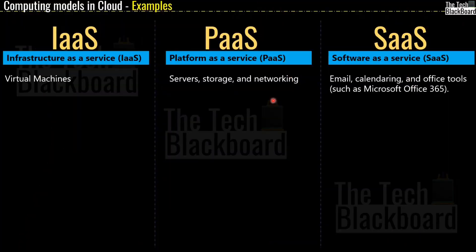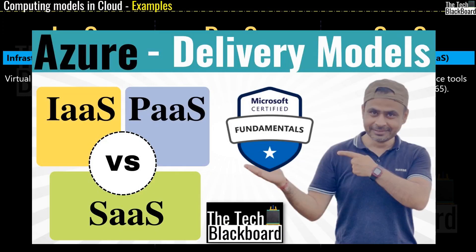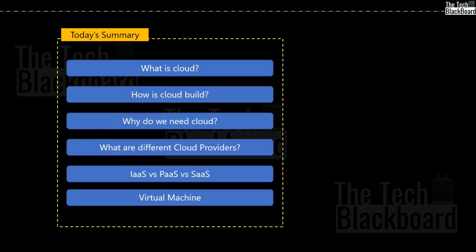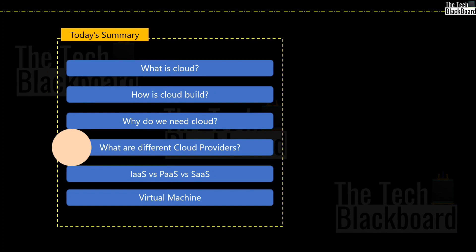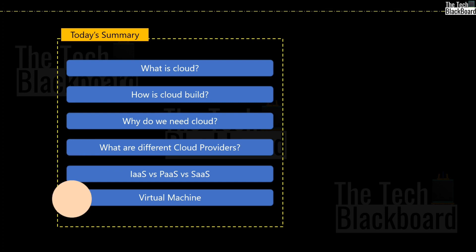Besides the Microsoft documentation, if you want to learn more on these cloud computing models, there is a full-length video on this channel that explains the entire concept of IaaS, PaaS, and SaaS in a lot more detail, comparing each of them and listing down use cases along with suitable examples. The link is in the i-button on the top right corner and in the description box. In summary, today we learned what is cloud, how the cloud is built, and why we need cloud technologies. We then understood different cloud providers and learned the concepts of IaaS, PaaS, and SaaS, and understood what are virtual machines.